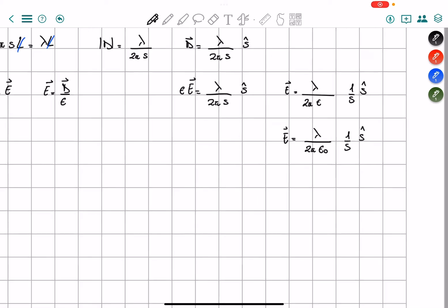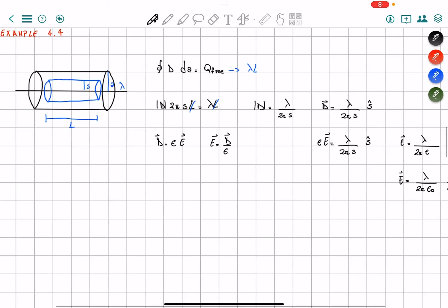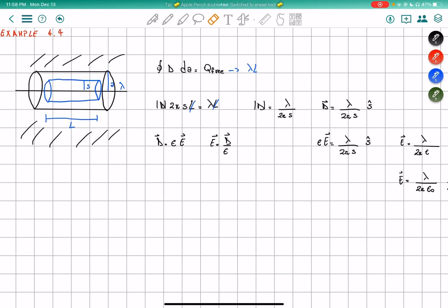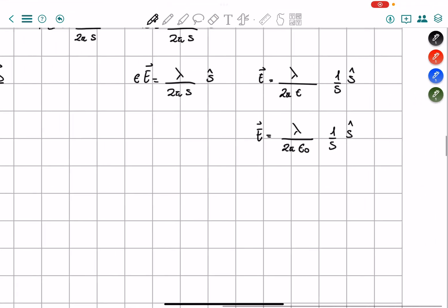This is because on the outside of our dielectric, the constant goes back to being equals to epsilon naught. So we can just substitute that epsilon naught.